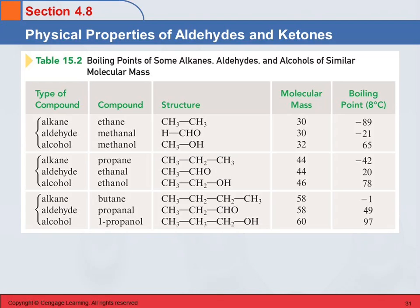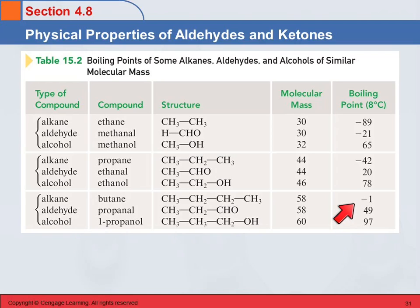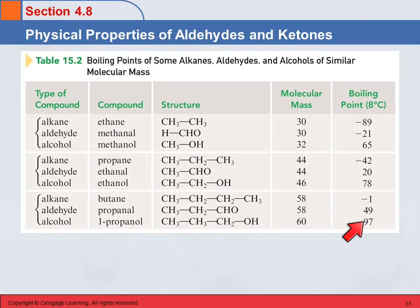Here's just a comparison — let's look at the ones on the bottom. With about the same molecular mass, we have an alkane, an aldehyde, and an alcohol, and their boiling points vary significantly. Butane is a gas at room temperature — its boiling point is minus 1 degree Celsius. Propanal has a boiling point of 49 degrees Celsius. And propanol boils at 97 degrees Celsius, just before water does.